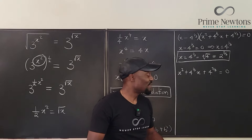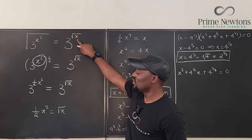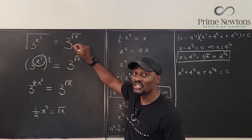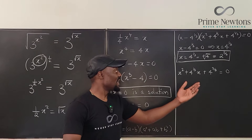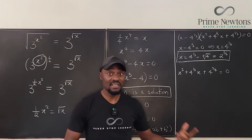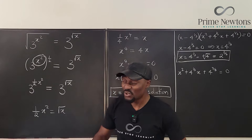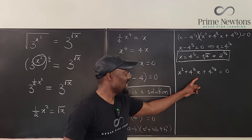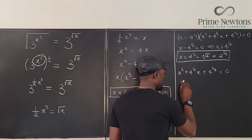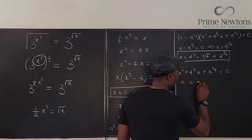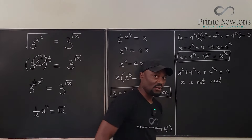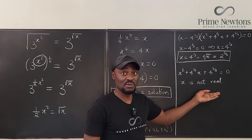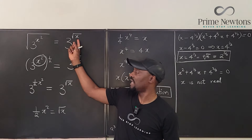Remember, in the original problem x is under a radical sign. You cannot put anything under a radical sign that is not positive. Complex numbers are neither positive nor negative, so they cannot go under a square root sign in this situation. Both solutions from the quadratic are complex, so we cannot plug them in. We don't need to waste time finding them.